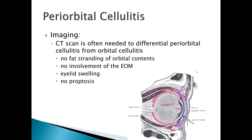A CT scan is often needed to differentiate between periorbital cellulitis and orbital cellulitis. With periorbital cellulitis on CT, you don't see any fat stranding in the orbit, there's no involvement of the extraocular muscles, the eyelid is swollen but there's no proptosis — that bulging eye effect, sometimes described as bug eye.